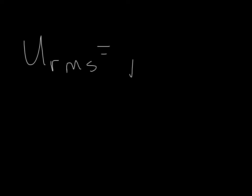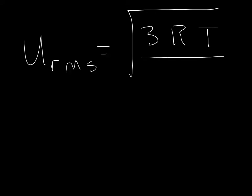u rms is equal to the square root of 3 times R, because K times Avogadro's number turns out to be R, the ideal gas law constant, divided by T. And when we multiply the mass of one particle times the number of moles, we get the molar mass. So the u rms is equal to the square root of 3 times R times T over the molar mass. Now, the value of R, the ideal gas law constant, is different in this case. It cannot be 0.0821 liter atmospheres per mole Kelvin.